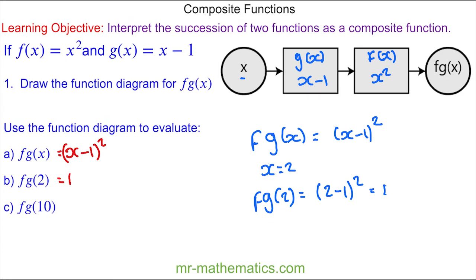For question c, we've got f g of 10. So now x equals 10, so we're going to substitute x as 10. We have 10 minus 1 squared, which is 9 squared, which is 81. So f g of 10 is 81.